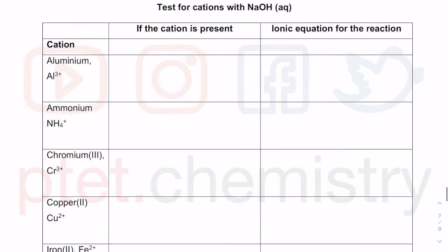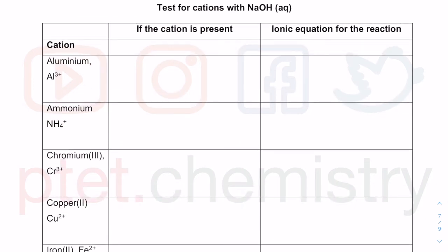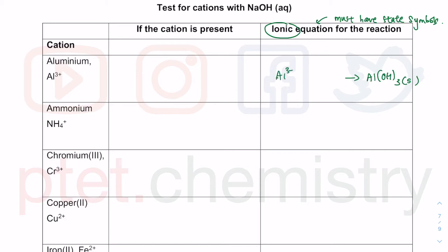I'll show you a couple of ionic equations and then you can do the rest. An ionic equation must have state symbols — if you do not have state symbols, then your ionic equation is not correct. Remember, you don't show all the ions; you show the important ions. We know that we get a white precipitate, so there's Al(OH)₃ as a solid. It comes from Al³⁺ (aq) with 3OH⁻ (aq).